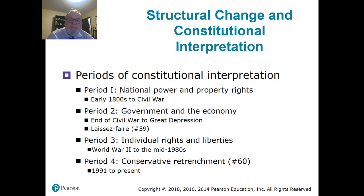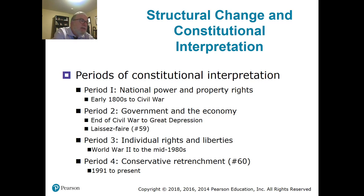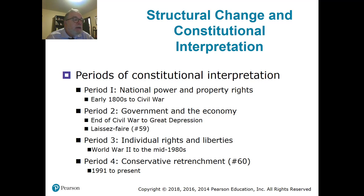Structural change in constitutional interpretation. Period one, the early 1800s to the Civil War: national power and property rights were big — people owning property was a big thing. The king would take property away; governments can do it with eminent domain, kings did it with bills of attainder. Bills of attainder were outlawed. That worked its way to the Civil War. After the Civil War through the 1930s, the court basically believed in laissez-faire — a French phrase. What is the doctrine of laissez-faire? It's a political-economic doctrine that governments ought not to interfere with the free market economy — very much capitalism.